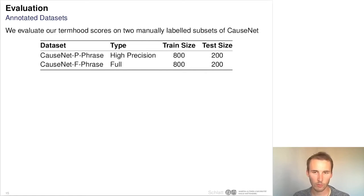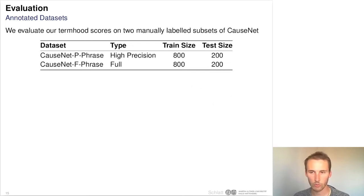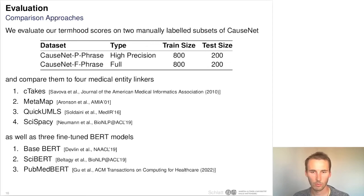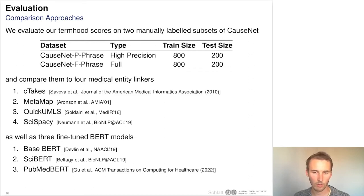We evaluated the termode scores against two manually labeled subsets of the previously introduced CauseNet: a high-precision subset and a subset of 1,000 labels from the full CauseNet, using 800 samples to train and 200 to evaluate. As baselines, we used medical entity linkers — CTEX, MetaMap, QuickUMLS, and SciSpaCy — considering a phrase health-related if any of these linkers detected a medical entity within it. We also fine-tuned different BERT models — base BERT, CyBERT, and PubMedBERT — using the labeled training data and evaluating on the test data.